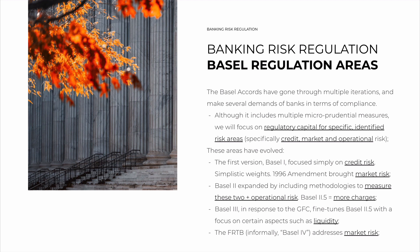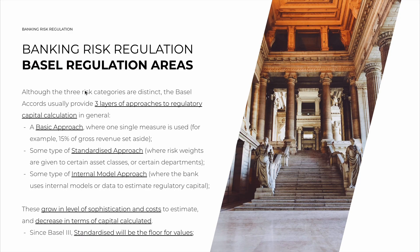Although the three risk categories — credit risk, market risk, and operational risk — are distinct, the Basel Accords usually provide two to three layers of approaches to regulatory capital calculation. Each bank can select one. The more sophisticated it is, usually the more demands the bank has. The first approach is usually a basic indicator approach, where one single measure is used.